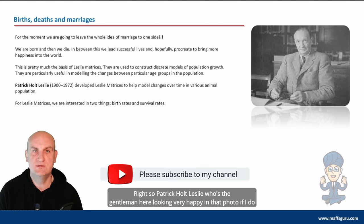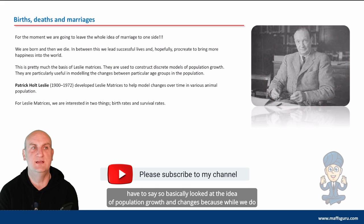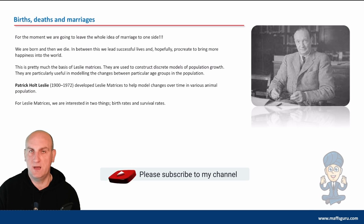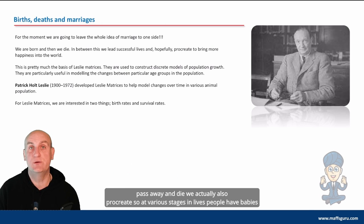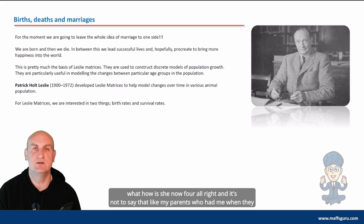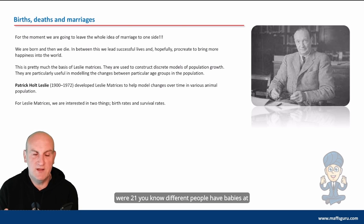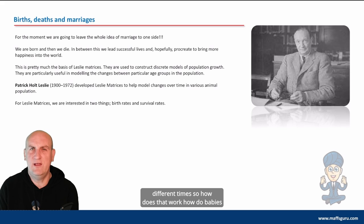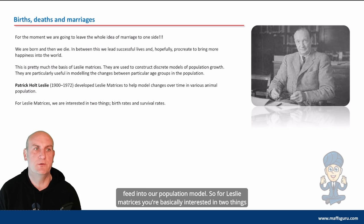Thankfully, we don't have that here. We have the idea that we can all run our course of our life, but sadly, people pass away. So Patrick Holt-Leslie, who's the gentleman here, looking very happy in that photo, basically looked at the idea of population growth and changes. Because while we do pass away and die, we actually also procreate. So at various stages in lives, people have babies. I had a baby at a very late stage in life, about the age of 40, and my daughter is now four. And it's not to say that like my parents who had me when they were 21, different people have babies at different times. So how does that work? How do babies feed into our population model?